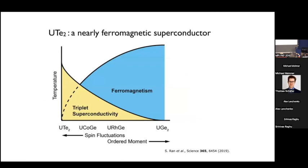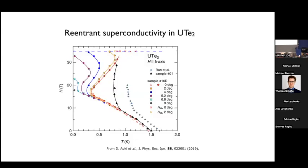UTe2 is considered a member of this family of ferromagnetic superconductors even though by itself it doesn't exhibit ferromagnetism. This is a cartoon plot made by experimentalists — UTe2 is thought to live somewhere down here, so it doesn't have long-range magnetic order, but on the other hand it has lots of magnetic fluctuations, which might be good for superconductivity as we heard in the morning session.